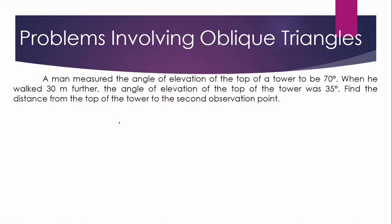If we are going to illustrate our problem, suppose this is our tower. This is the first observation point where the man is, and the angle of elevation is 70 degrees. The man then walked 30 meters further, and from the second observation point, the angle of elevation becomes 35 degrees. The unknown is the distance from the top of the tower to the second observation point — this is our x. Looking at this, we have here an oblique triangle.